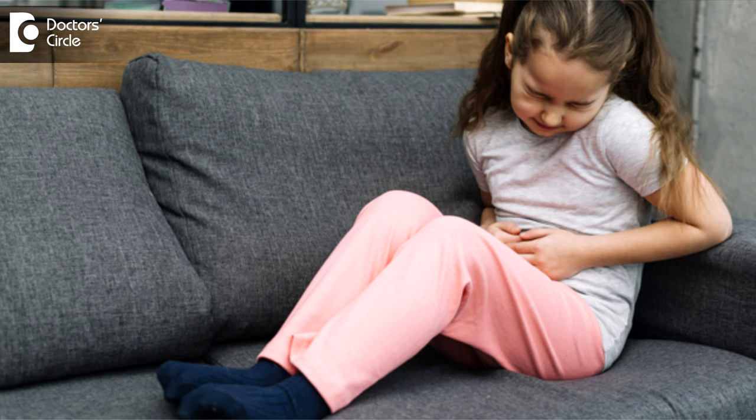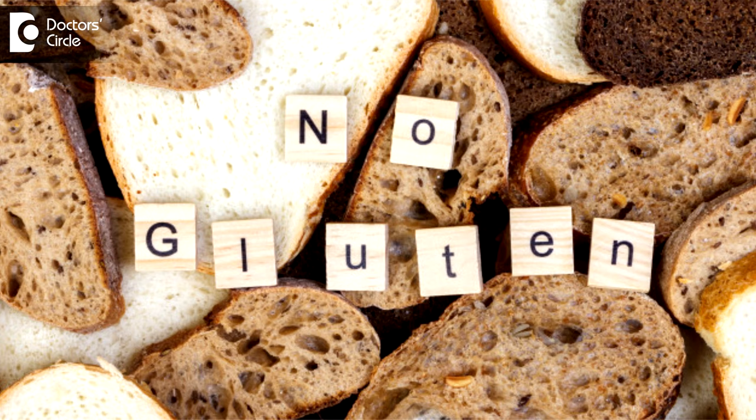Mesenteric lymphadenitis is very common in children less than 10 years, and these children will manifest with severe abdominal pain on and off with certain foods. It could be an acquired celiac condition where gluten intolerance or gluten allergy may be present, which can cause this.